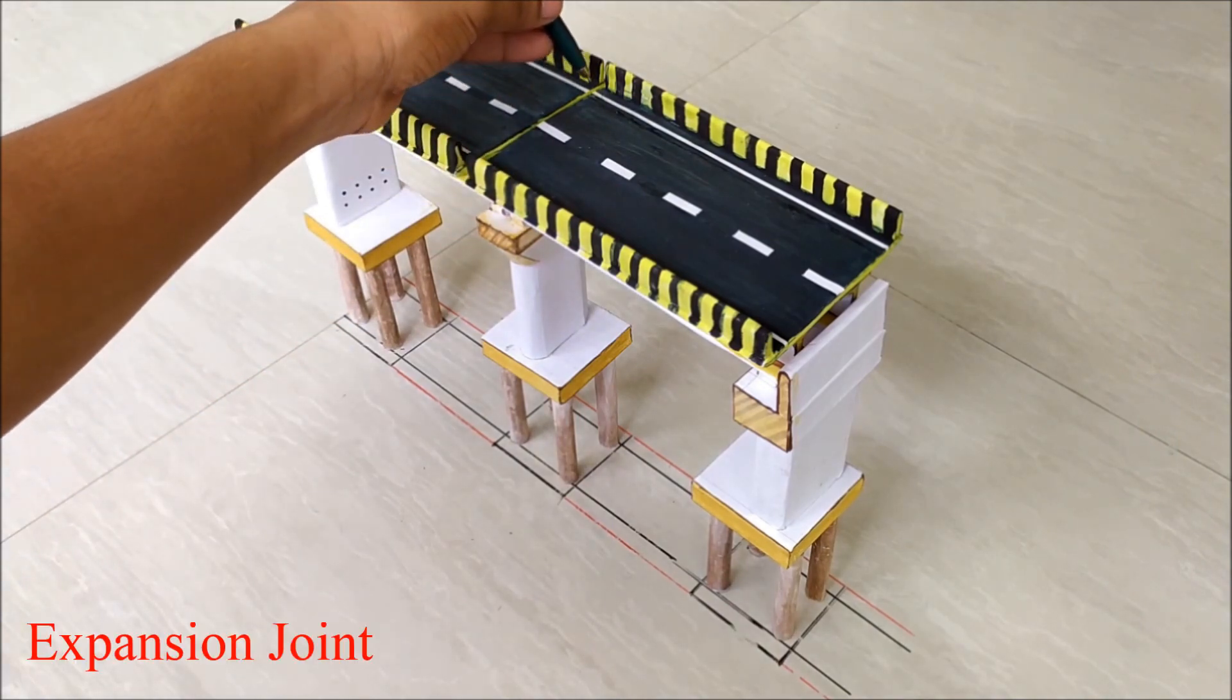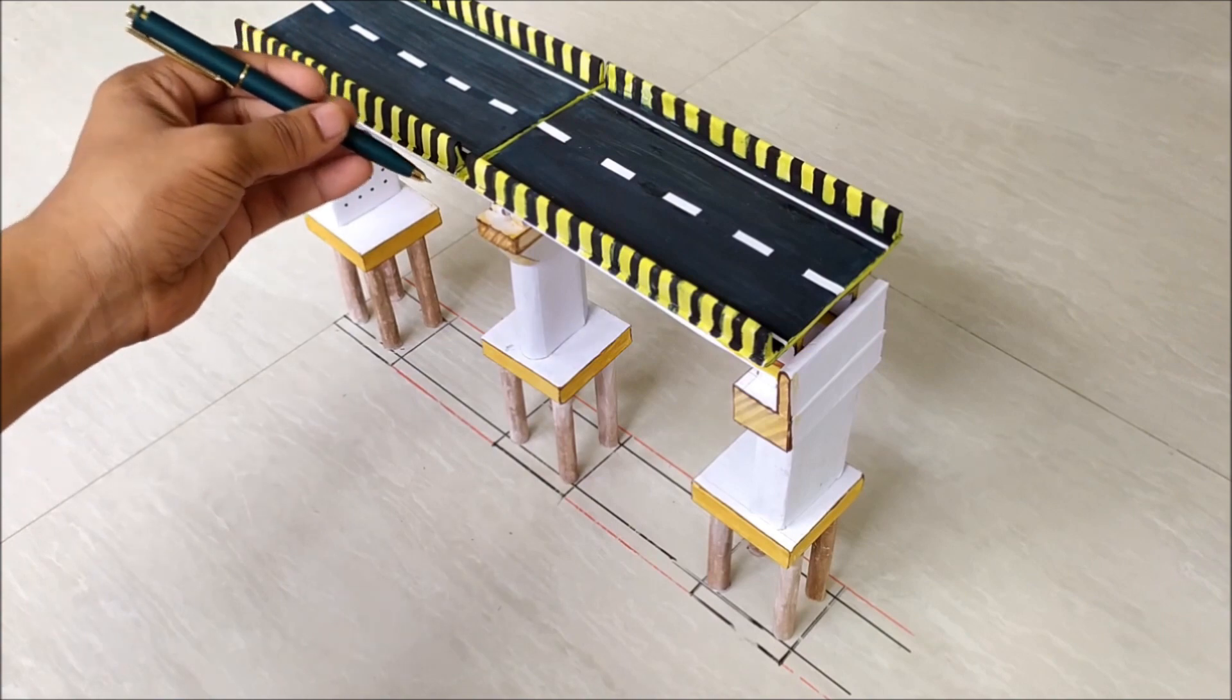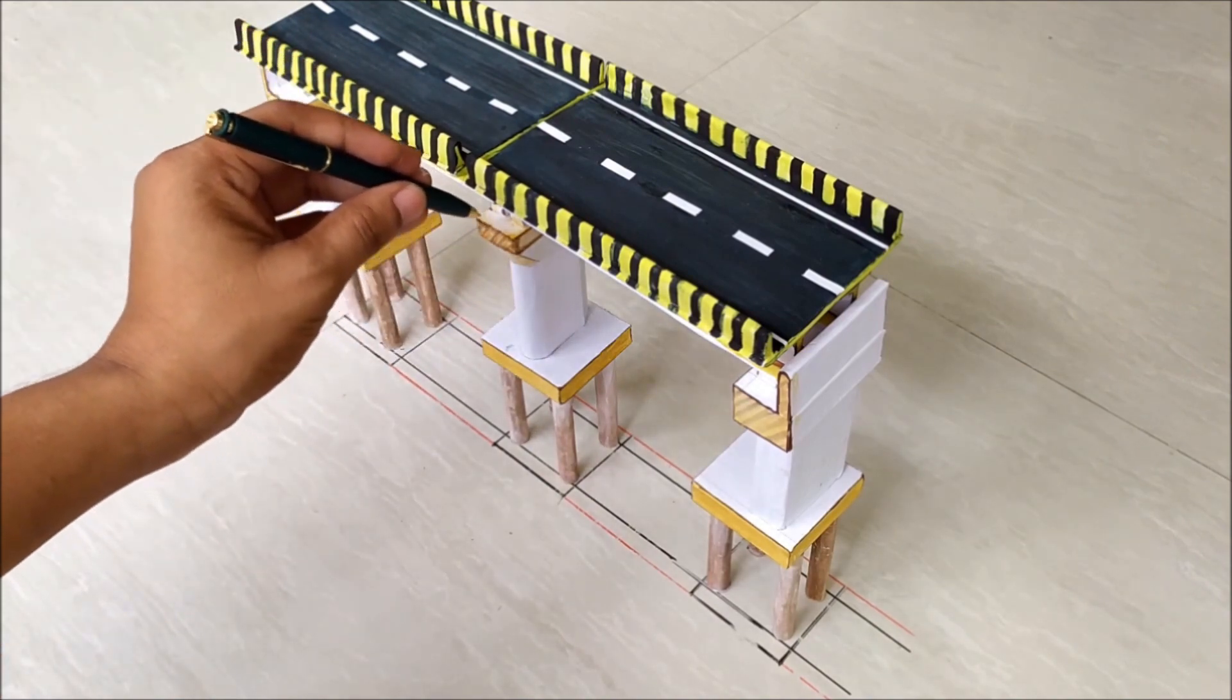And the gap between the deck is called an expansion joint, which allows the movement of superstructure due to thermal expansion and contraction, live loads, seismic activity, etc.